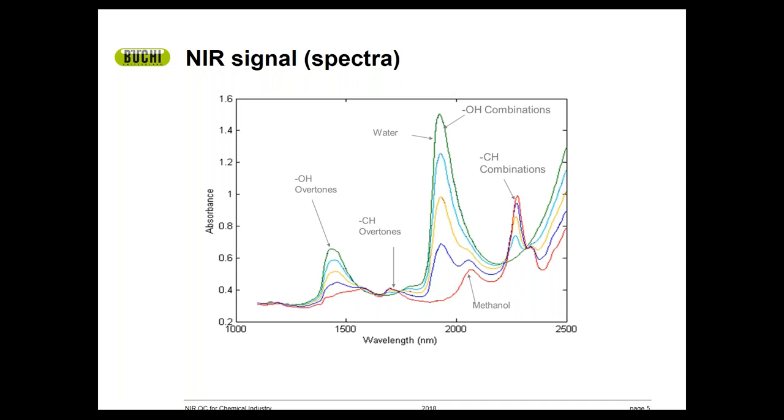Because the absorbance values we measure in NIR spectroscopy are proportional to the concentration of those functional groups, we can again do both quantitative and qualitative measurements using these NIR data.